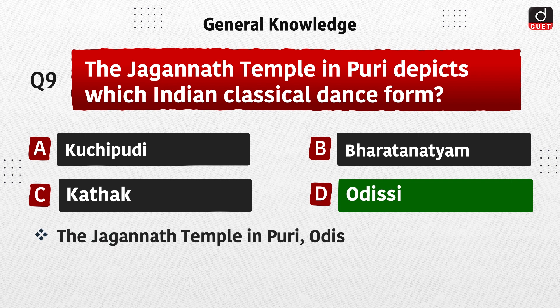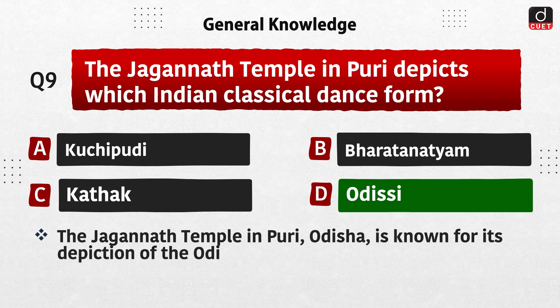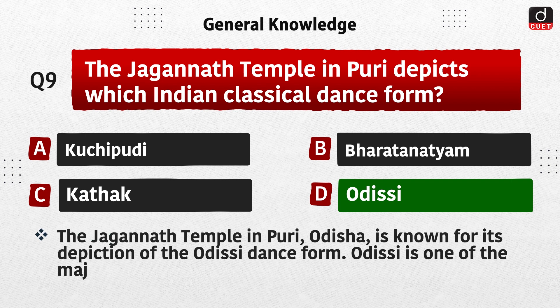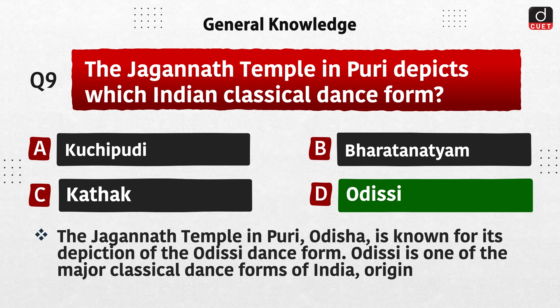The Jagannath temple in Puri, Odissi is known for its depiction of the Odissi dance form. Odissi is one of the major classical dance forms of India originating from the state of Odisha.